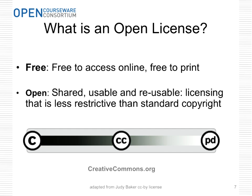An open license makes these materials free to use online, free to print out, reusable within your classroom, and modifiable. If you look at the picture at the bottom of your screen, you'll see a continuum starting with traditional copyright, which is the big C. In between sits Creative Commons, the open licensing system most accepted today in the education world. And finally on the far end, public domain. Creative Commons sits on top of traditional copyright and allows the copyright holder to open it up to additional sharing. For more information, go to creativecommons.org.